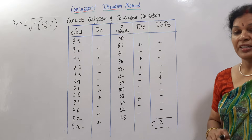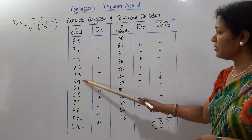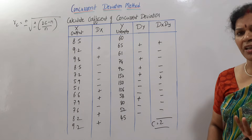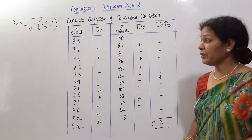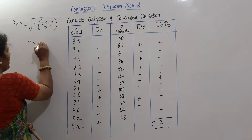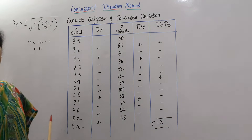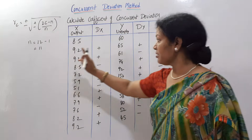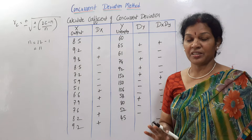Next, find n. The actual number of observations is 12 (counting 1 through 12). However, we only took signs for 11 of them because we left the first number empty as the base. Therefore n equals 12 minus 1, which is 11. We subtract 1 because the base number was not assigned a sign. So n is 11.